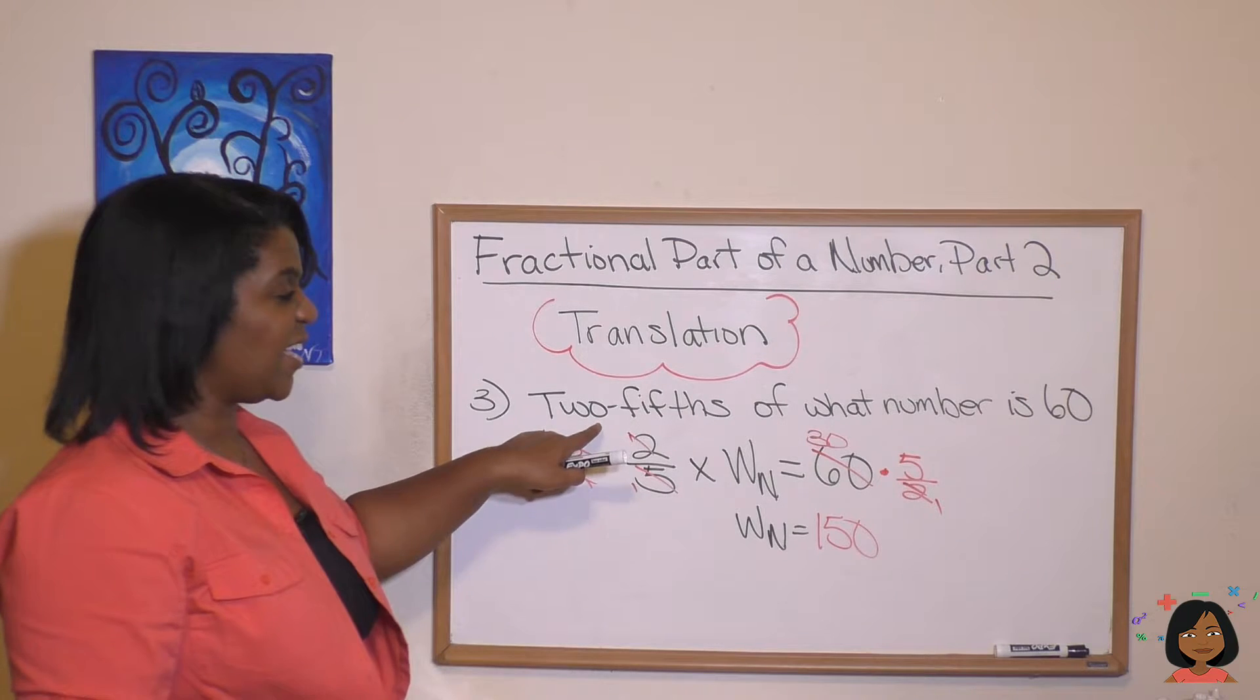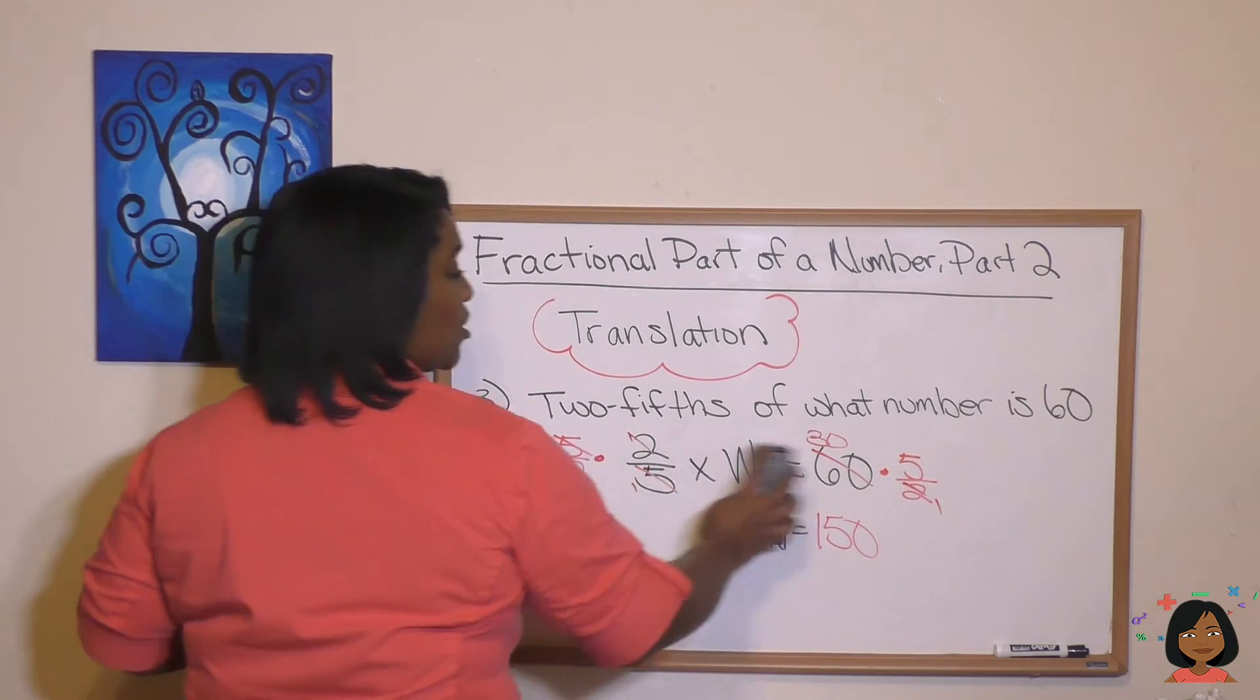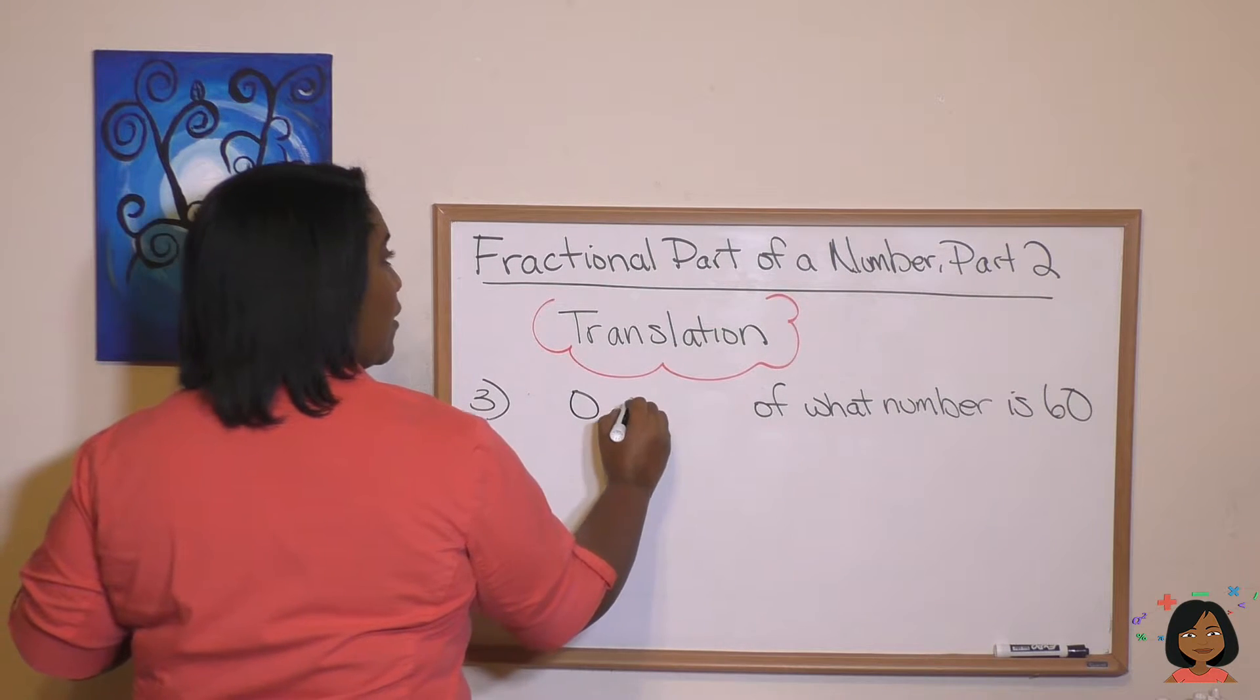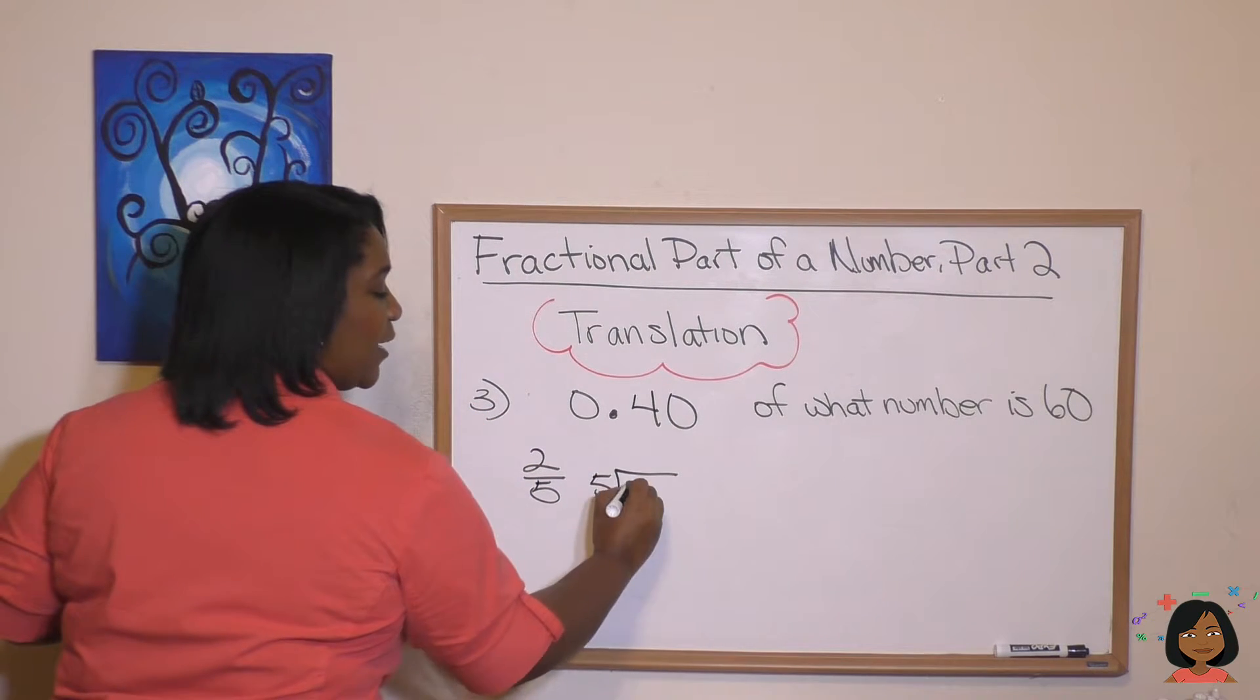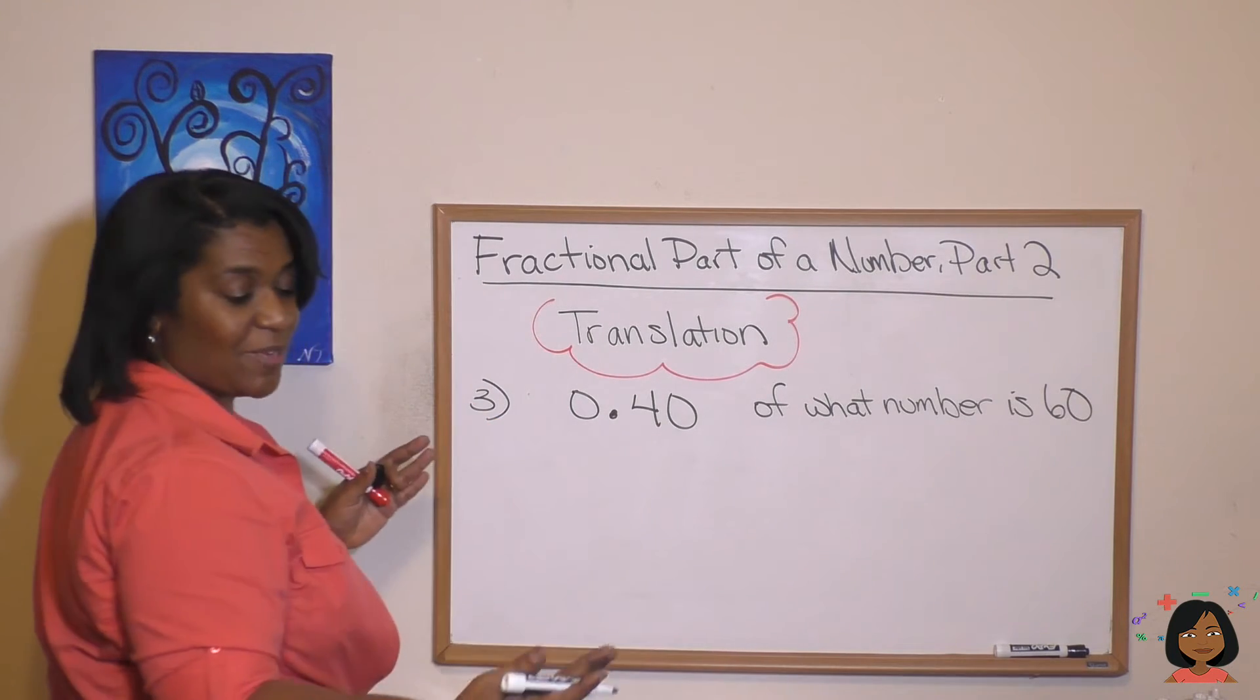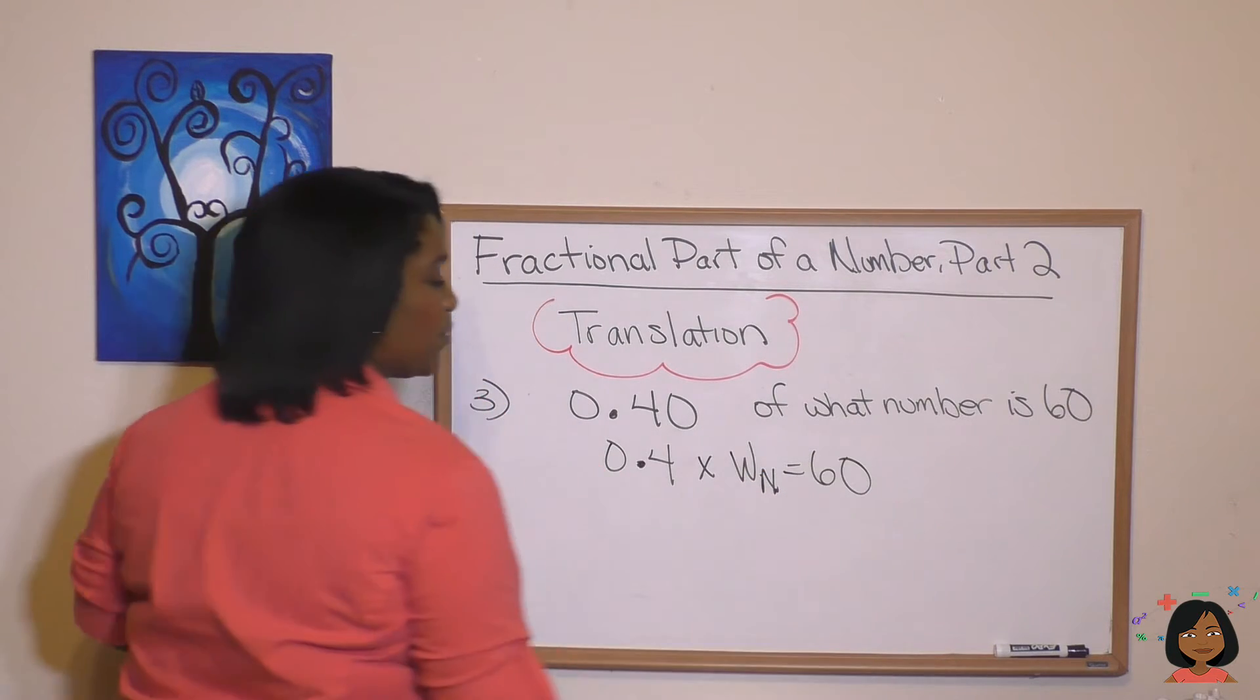Now, what if they had just asked the same thing, but change this two fifths to a decimal? Well, two fifths happens to be—so I'm going to change it to a decimal. Two fifths is the same thing as dividing, and that would give us 0.4. So same thing. So we're asking now, instead of a fraction, we have a decimal. Let's translate. 0.4 of what number equals 60? So we've translated.